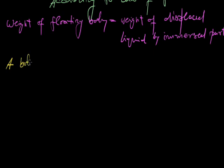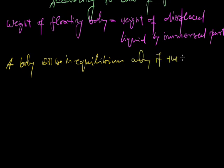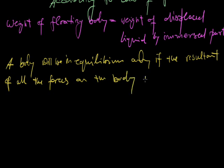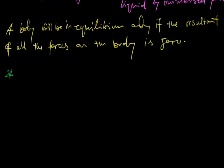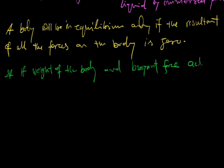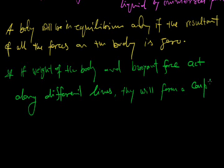A body will be in equilibrium only if the resultant of all the forces on the body is zero. If the resultant of all the forces in equilibrium condition is zero, it means there is no resultant force on the body. If weight of the body and buoyant force act along different lines, they will form a couple by which the body will rotate.